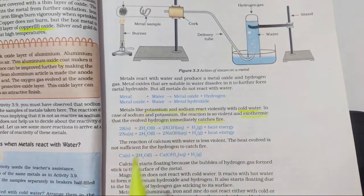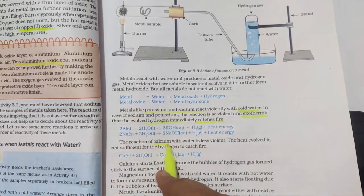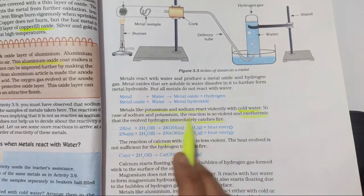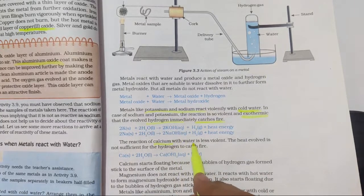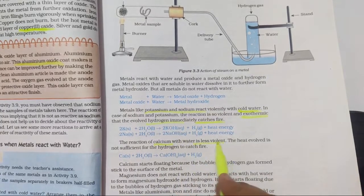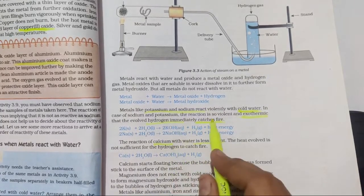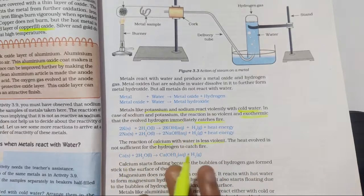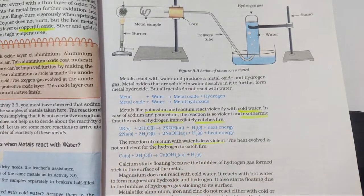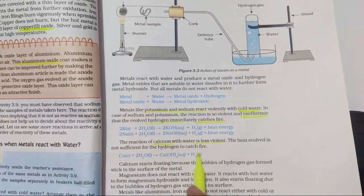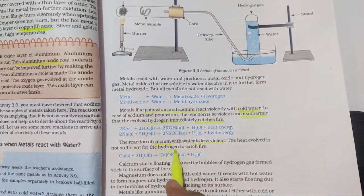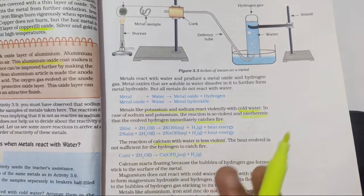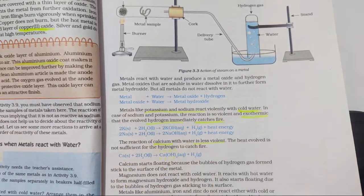Next important point: calcium. Since sodium and potassium are above calcium in the reactivity series, calcium reacts less violently. Hydrogen gas is produced but does not catch fire. The hydrogen gas bubbles attach to the surface of calcium, which causes calcium to start floating.